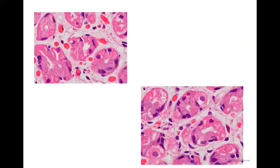In a normal gastric gland there are some scattered inflammatory cells — these are the lymphoplasmacytic cells which are normally a component of the lamina propria.